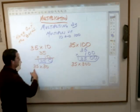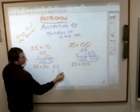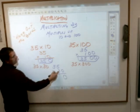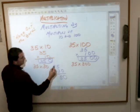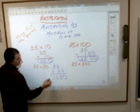Even if it was 35 times 30, you would take the 3, hang out that one zero, drop it straight down, and then 5 times 3 is 15, 3 times 3 is 9 plus 1 is 10. So again, you get 1,050 for that answer.